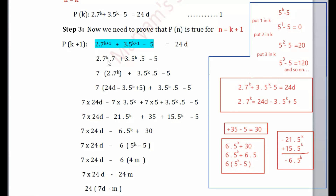2·7^(k+1) splits into 2·7ᵏ·7, and 3·5^(k+1) splits into 3·5ᵏ·5, minus 5. I'll put 2·7ᵏ in a bracket and keep 7 outside. I substitute the value of 2·7ᵏ from P(k): 2·7ᵏ = 24d - 3·5ᵏ + 5. This is derived from the inductive hypothesis P(k).